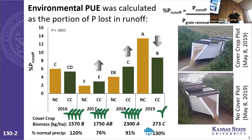The effects of cover crops on this percent P runoff metric are definitely variable. In 2017 and 2018, we actually see significant increases in the portion of phosphorus leaving the field in runoff with the cover crop treatment compared to no cover. Then in 2019, things flip around and the cover crop treatment is actually looking good from an environmental conservation perspective, with a decrease in the percent P runoff.